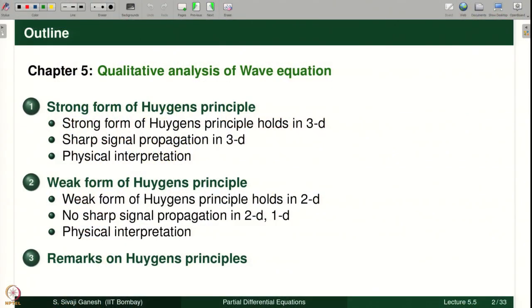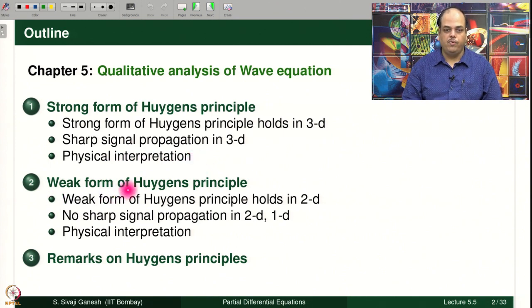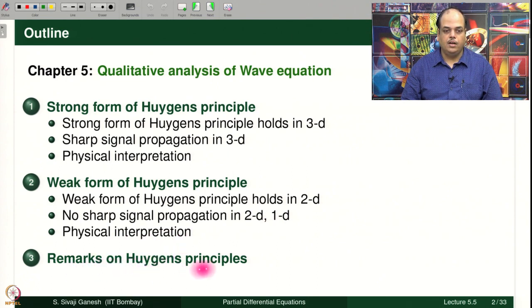Continuing our qualitative analysis of the wave equation, today we are going to see what is called Huygens' principle. The outline for today's lecture is: first we introduce what is called the strong form of Huygens' principle and show that it holds in 3D, with a consequence of sharp signal propagation in 3D and a physical interpretation. Then we introduce the weak form of Huygens' principle, show it is satisfied in 2D and 1D, and give physical interpretations and remarks.